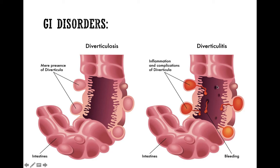When those pockets become inflamed, it is considered diverticulitis — inflammation of the diverticula — which causes severe pain. At that point, they need to go on a low-fiber diet, also called a low-residual diet. Foods containing nuts, seeds, and skins — like the skin of a potato or apple — should be removed when in that inflammatory state in order to alleviate symptoms.